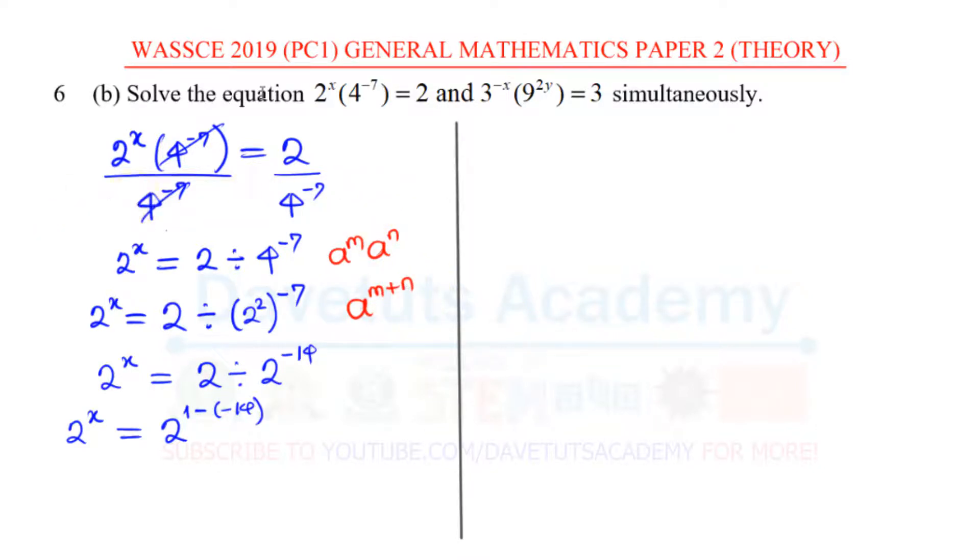And if it is division, we can have it that A^M ÷ A^N is the same as A^(M-N), and that is what we are actually using here now in this particular case.